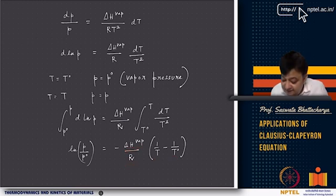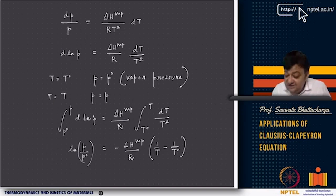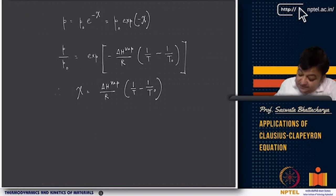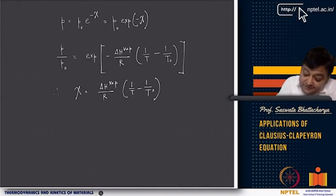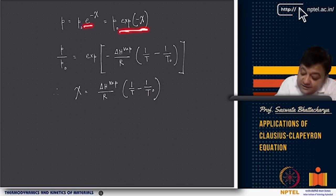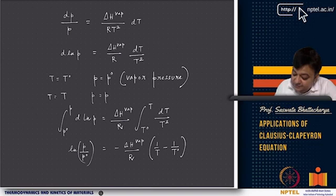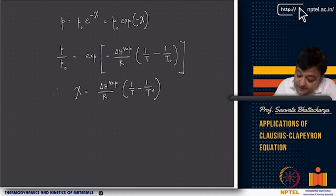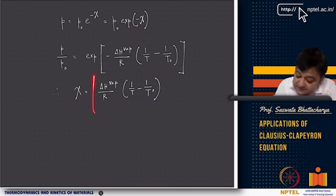Note there is a negative sign and delta H_vap is positive (endothermic process). This can be rewritten as P = P_0 · exp(−chi), where chi = (delta H_vap / R)(1/T − 1/T_0). If temperature increases, pressure increases, consistent with vaporization being endothermic. If you want to include temperature dependence of delta H_vap, the same generalized recipe shown earlier applies.